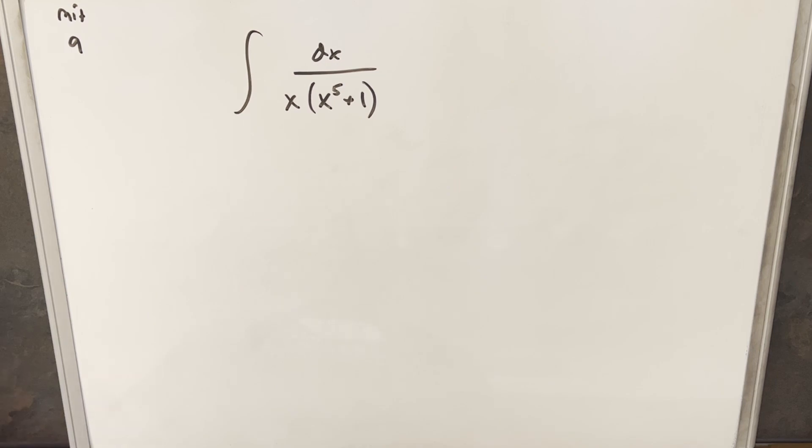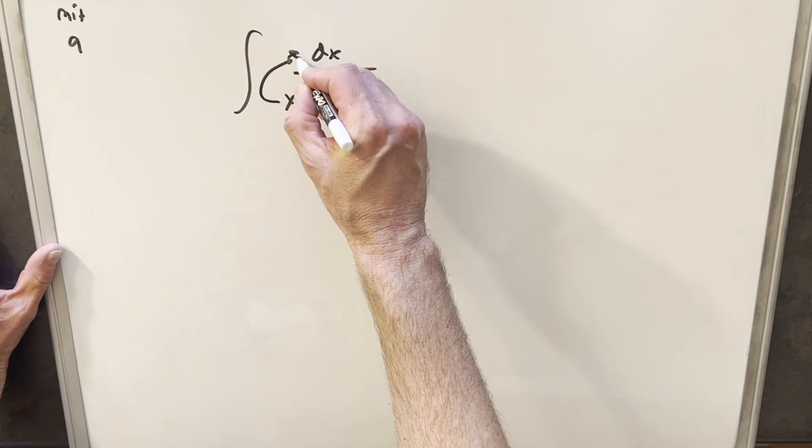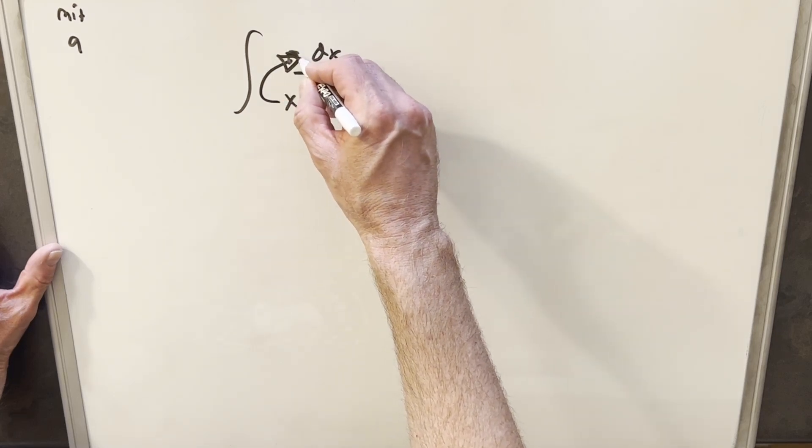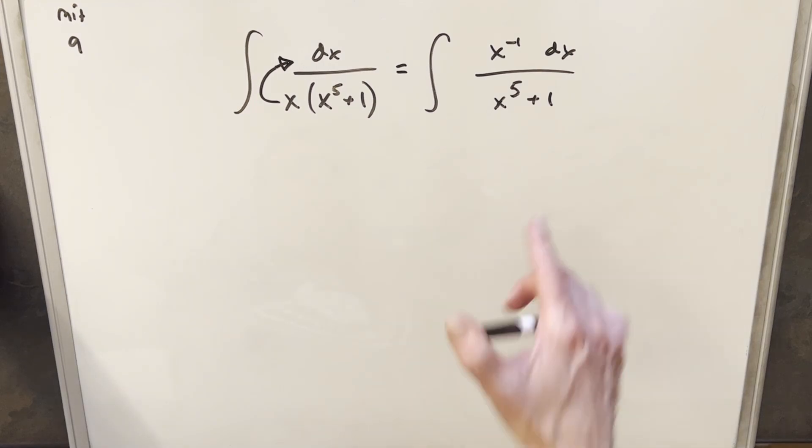Okay, I think if I could help it, I want to avoid partial fractions. And what I'm going to do to start, let's take this x and bring it into the numerator here. Okay, in doing that,